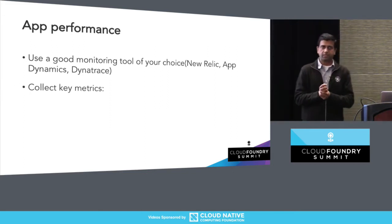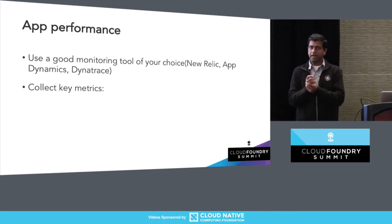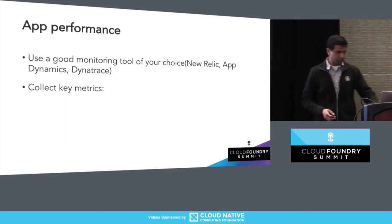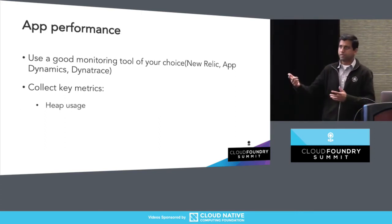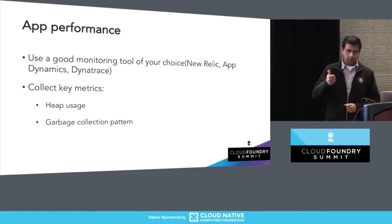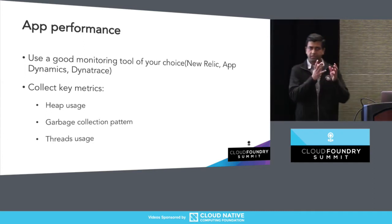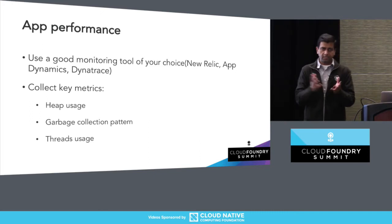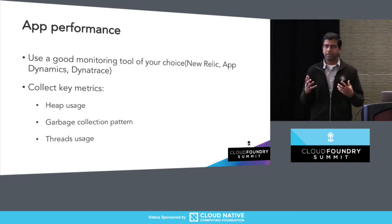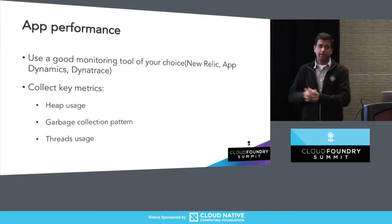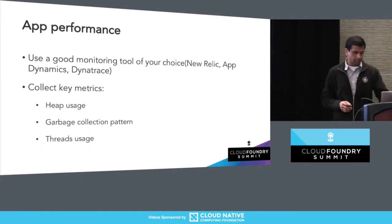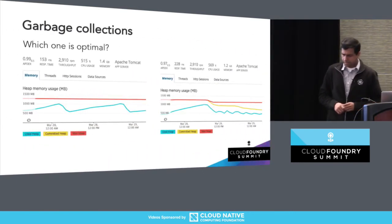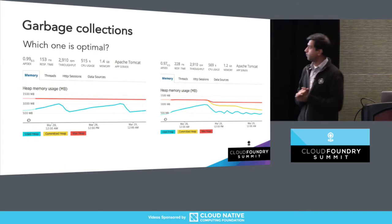We need to collect some key metrics, either through the monitoring tool or through your own scripts or services. Some of the key things I would suggest: heap usage — how is your heap being utilized? How is the garbage collection pattern looking? And how is your thread usage — how many active threads, how many idle threads? These are some key metrics you need to collect irrespective of whether your application is running fine or not. Start with these basic metrics.